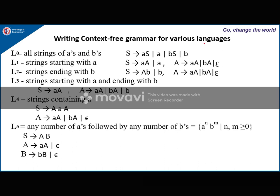Now let us see how to write context-free grammars for various languages. First: all strings of A's and B's. The productions are S derives AS | A | BS | B. If the language should accept the empty string, include epsilon; otherwise remove it. You should write the other parameters V, T, P, S with these production rules.